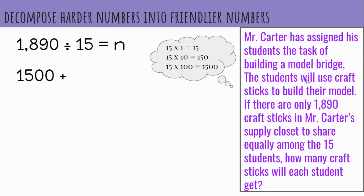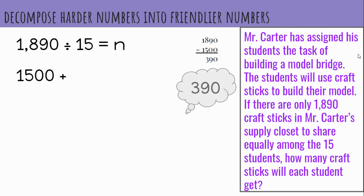So if that's a friendly chunk, that leaves me with 390 left to decompose. Think for a moment, how can we further decompose 390 into friendlier numbers? Pause the video to answer.